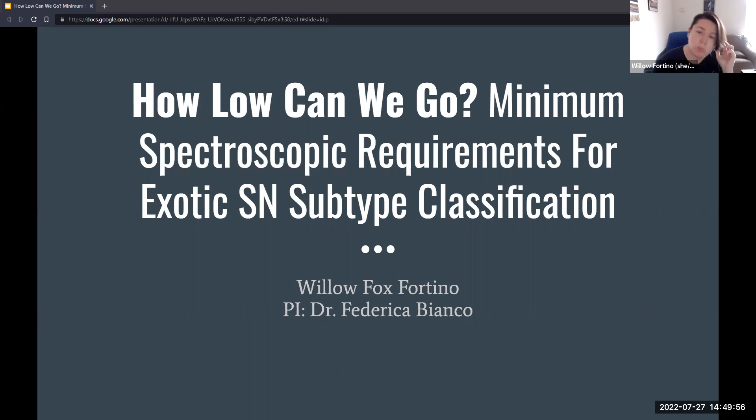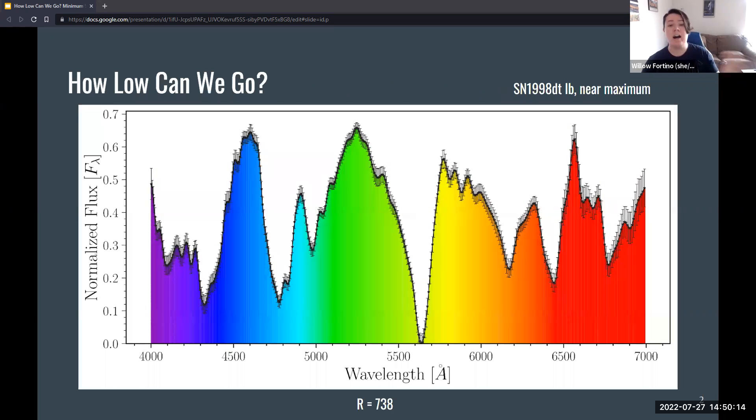Essentially, the overarching theme of our project is we're trying to see how well we can classify exotic supernovas, specifically stripped envelope supernovas, using low resolution spectrum. So let's get started. Let's first take a look at a high resolution spectrum. This is at R equals 738, and the R value is the spectroscopic resolution, which is equivalent to lambda divided by delta lambda. This is a fairly typical spectrum.